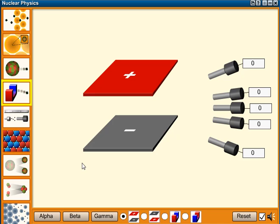This is to show how alpha, beta and gamma particles are deflected by an electric field. Gamma particles are uncharged, so they go straight through.